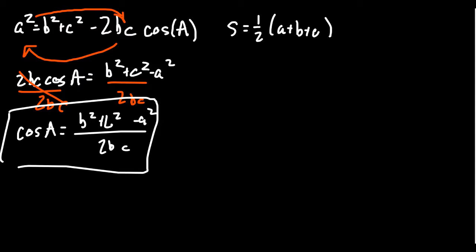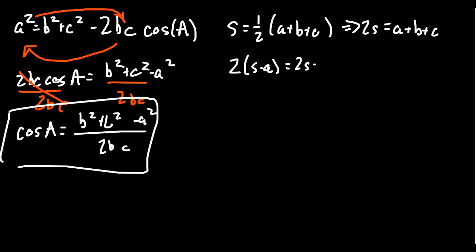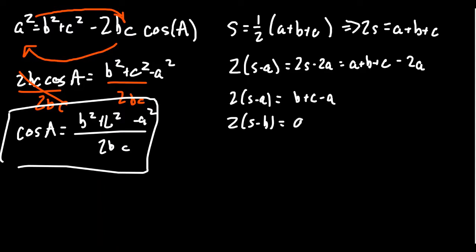Since s = (1/2)(a + b + c), we have 2s = a + b + c. Looking at 2(s − a), distributing gives 2s − 2a = (a + b + c) − 2a = b + c − a. Similarly, 2(s − b) = a + c − b, and 2(s − c) = a + b − c. These s-minus expressions appear directly in Heron's Formula.